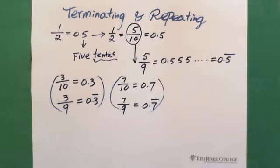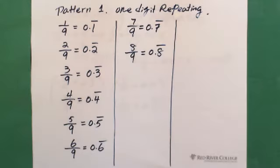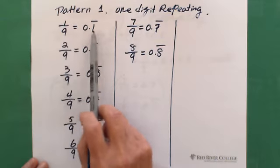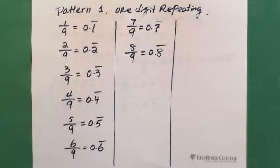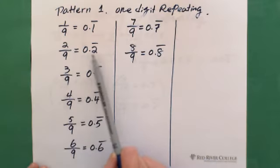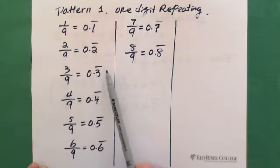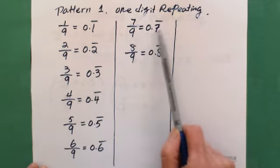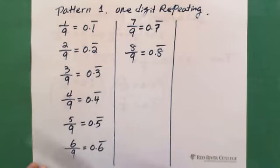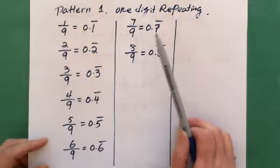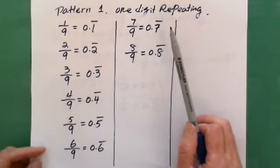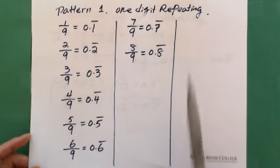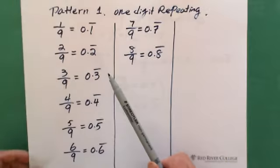So this is Pattern 1. Any number divided by 9 always gives a repeating decimal. For example: 1 over 9 is 0.1 repeating, 2 over 9 is 0.2 repeating, 3 over 9 is 0.3 repeating, 4 over 9 is 0.4 repeating, 7 over 9 is 0.7 repeating, 8 over 9 is 0.8 repeating. As long as the repeating decimal is 1 digit, the denominator is 9.